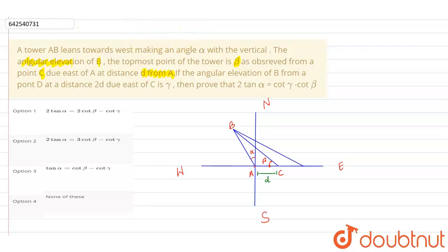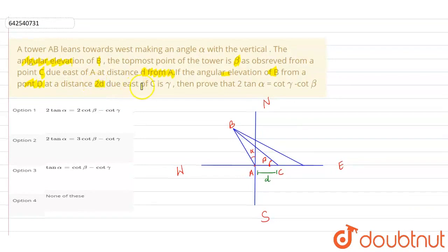Next they are saying if the angular elevation of B from a point D. Now here we have a point D at a distance 2D due east of C. So with the east of C we have a point D. Let us mark that point also. This will be the point D and it is at a distance of 2D from C. So CD will be 2D.